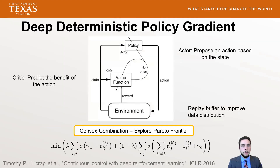For deep reinforcement learning, DDPG — deep deterministic policy gradient — is based on an actor-critic architecture where the actor proposes an action based on the state and the critic predicts the benefit of that action. A replay buffer is used to improve the data distribution to approximate the i.i.d. assumption. The two networks work together, and we define a convex combination with Lambda to explore the Pareto frontier, changing Lambda between zero and one to see how results vary.